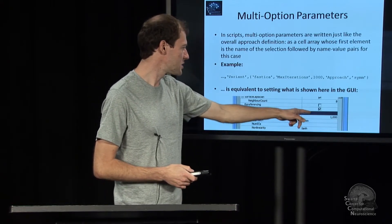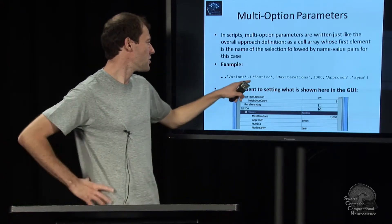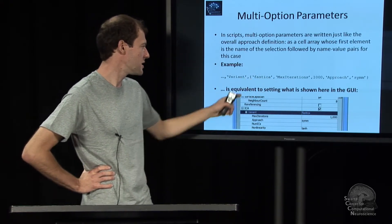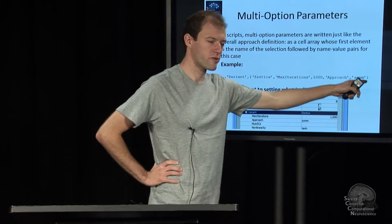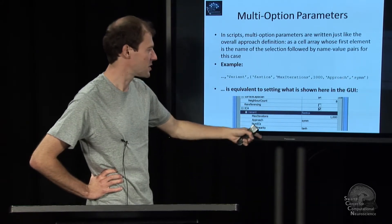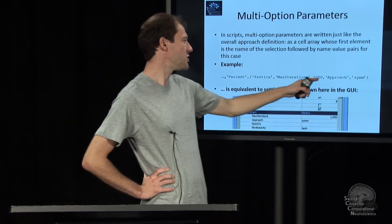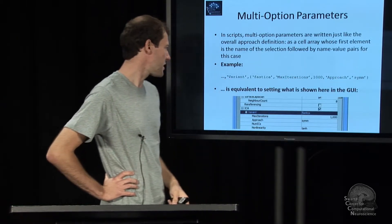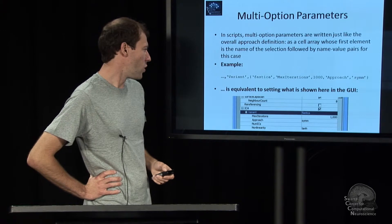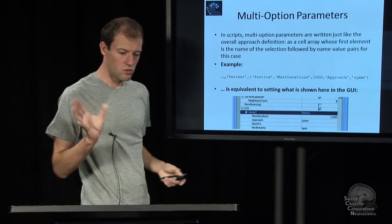Whenever you see in the GUI something like this, you need to say which case you want. In this case it would be fast ICA, and then you can go on and override whatever subparameters it just happens to have, this variant, max iterations, approach, symmetric or something like that. That's multi-option parameters.